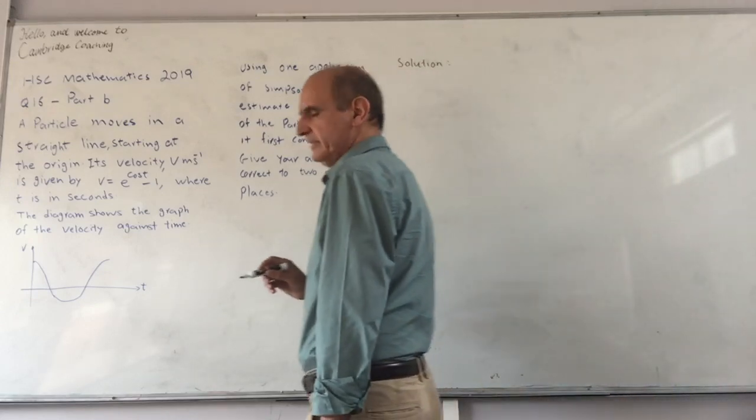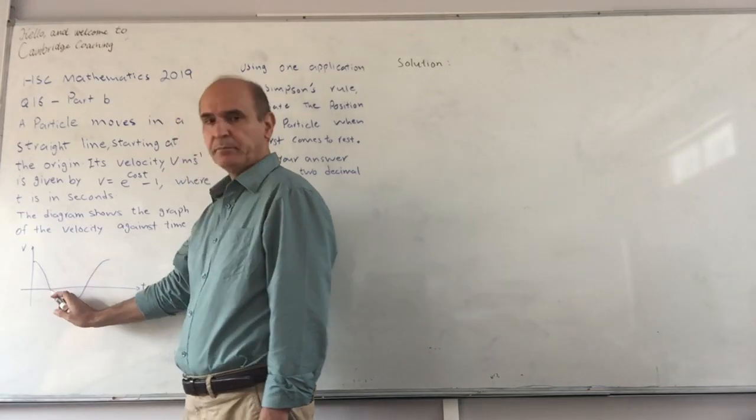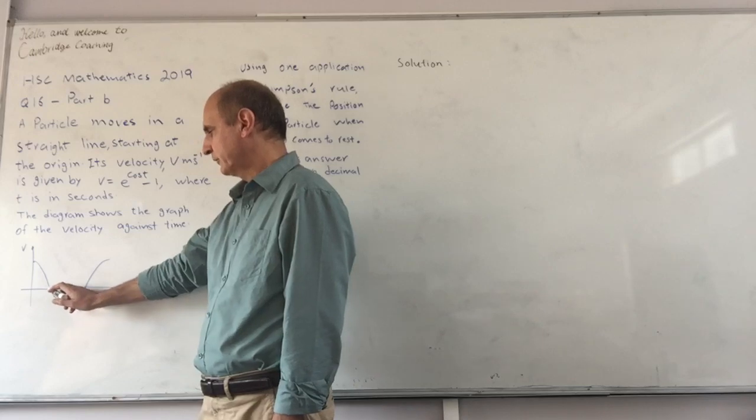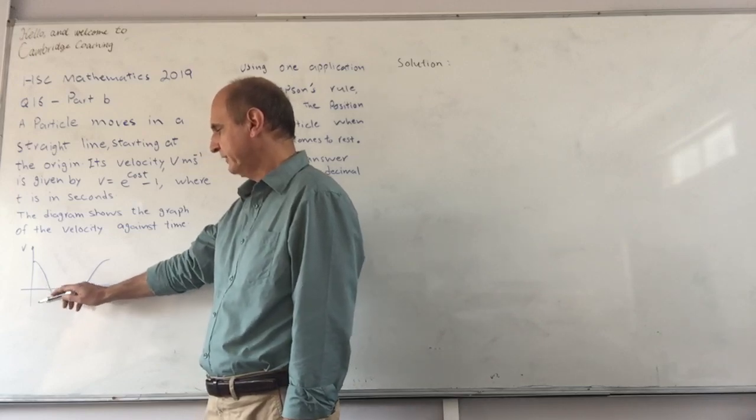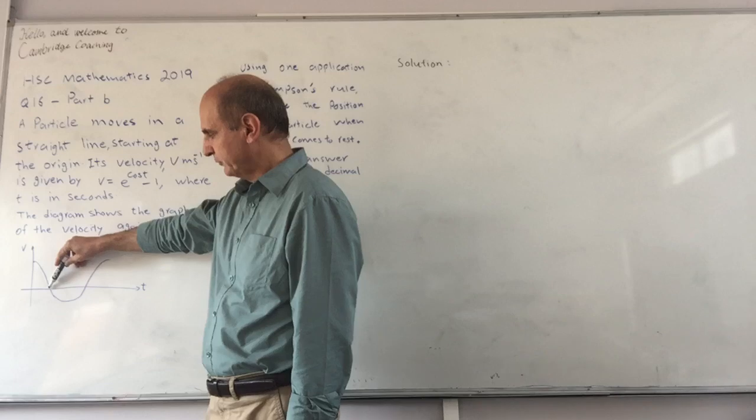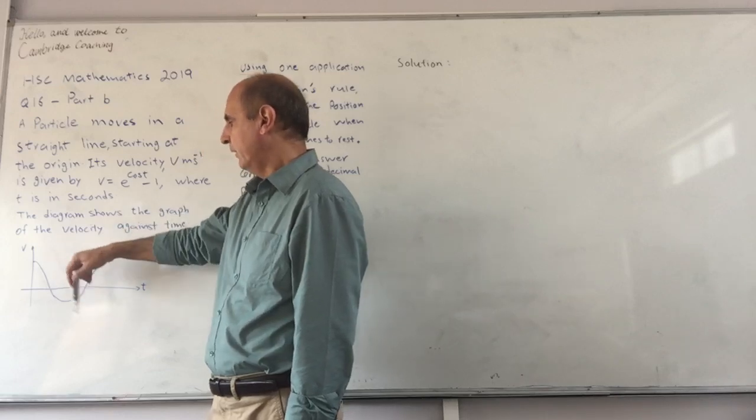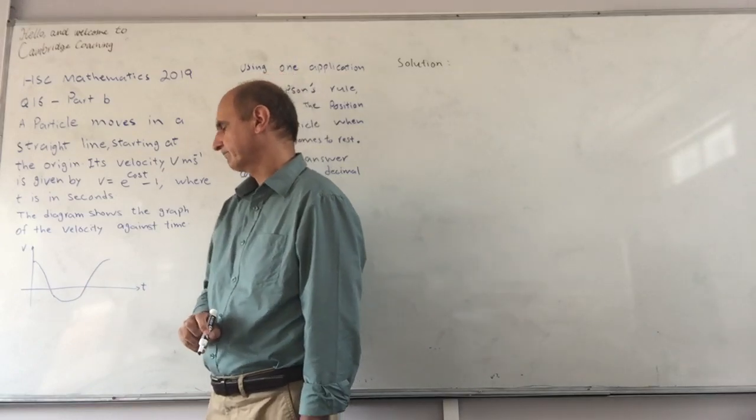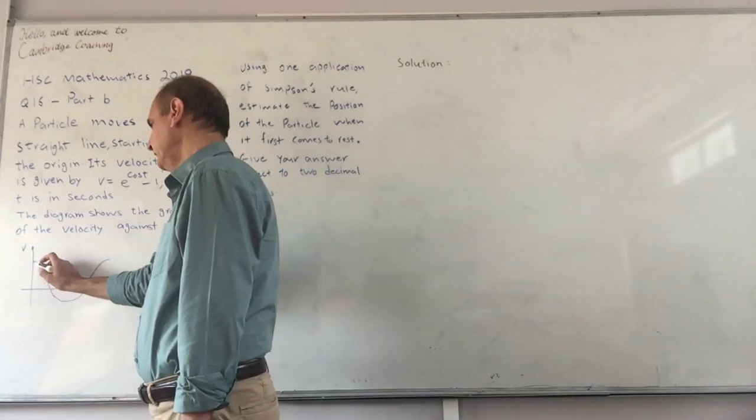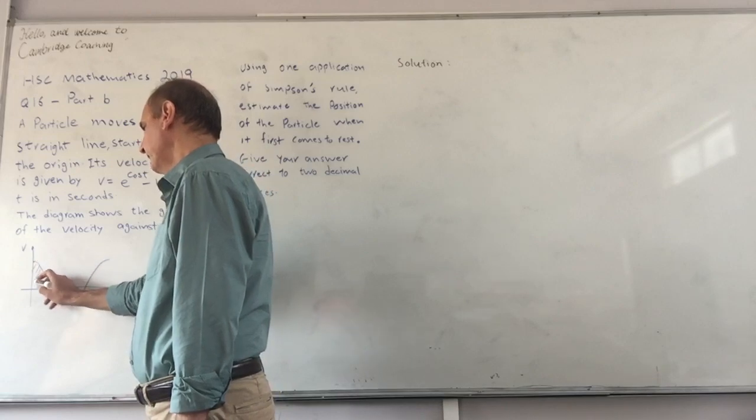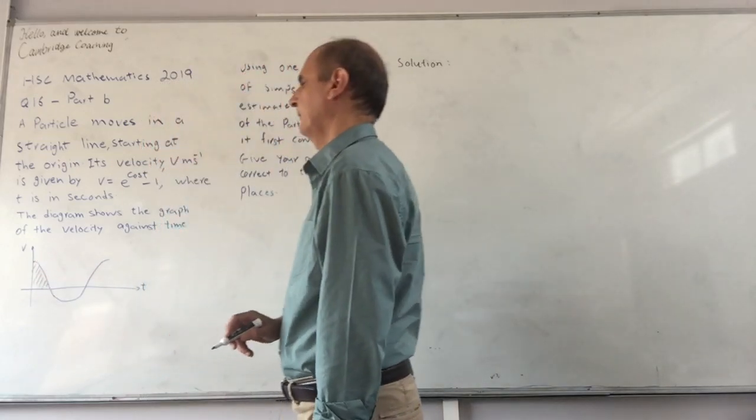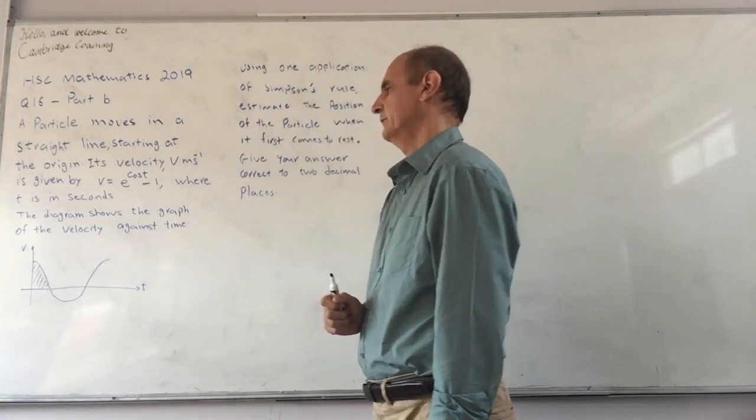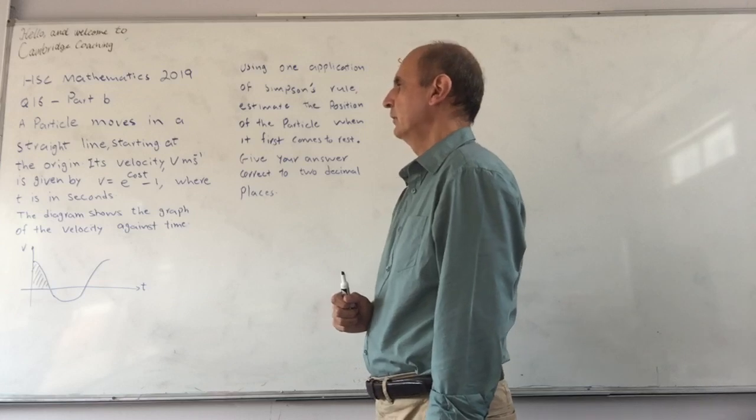Here we can see that the particle comes to rest at that point. So we need to find, from time zero until it comes to rest, what distance it has covered. We need to find this area, and that is the distance that it has moved away from its original position.